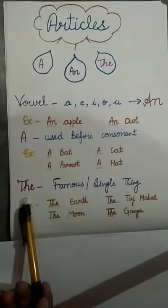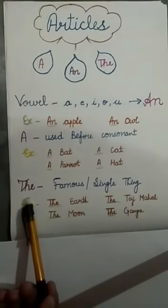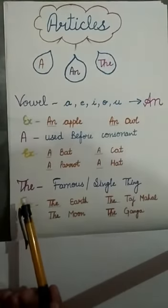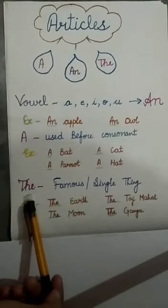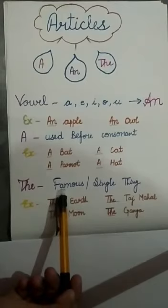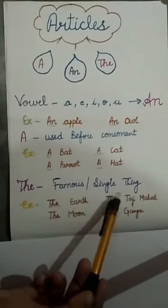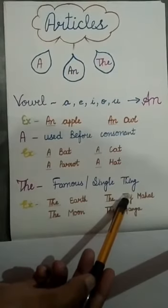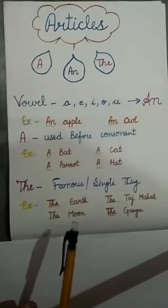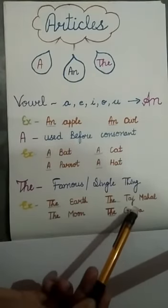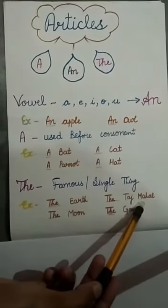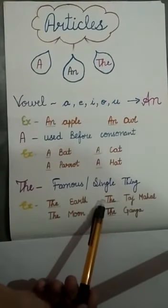Next is THE. THE is used at places where there's only one of that type. Like famous building, famous book. So we use THE.